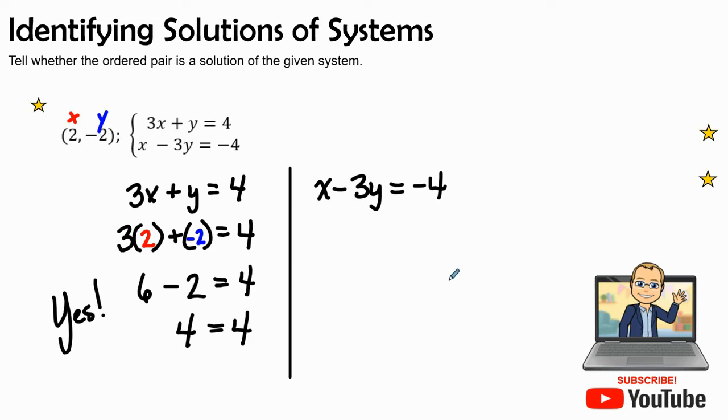So let's see if it's on the other equation. We're going to replace our variables with parentheses. Our x value is 2, our y value is negative 2. So 2 and a negative 3 times a negative 2 is a positive 6. Does that equal negative 4? Fortunately 8 does not equal negative 4. Therefore the answer is no.